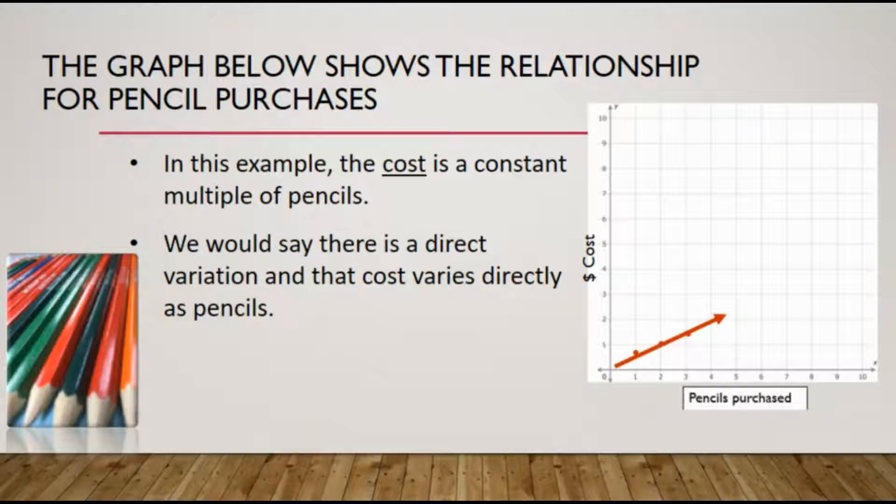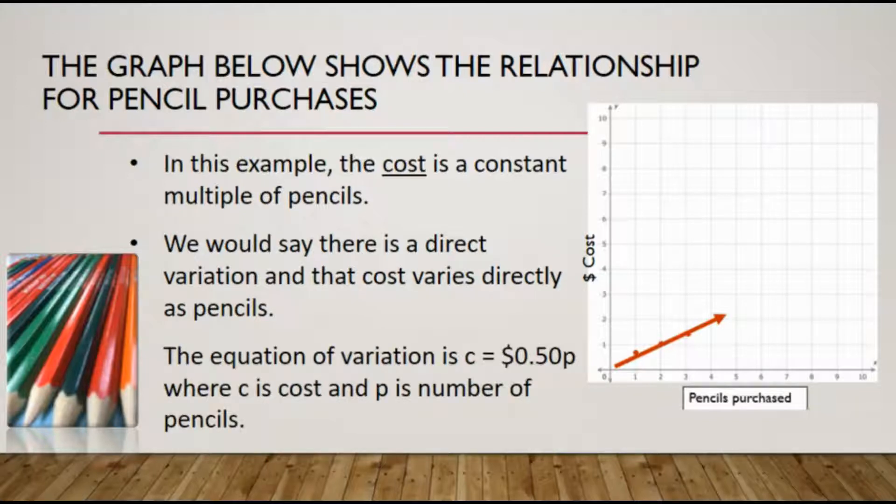The equation of direct variation then is C for cost is equal to 50 cents times P where P is the number of pencils. The 50 cents again would be our K constant of proportionality for this example.